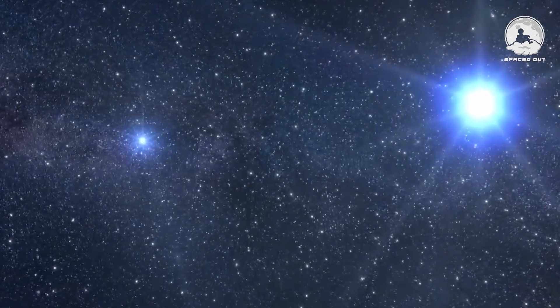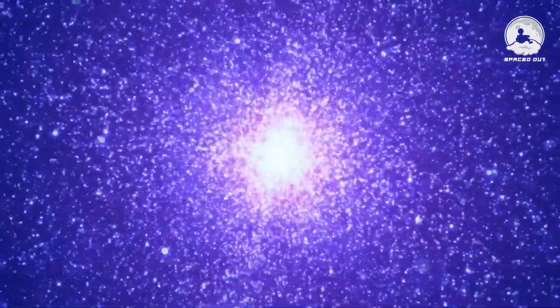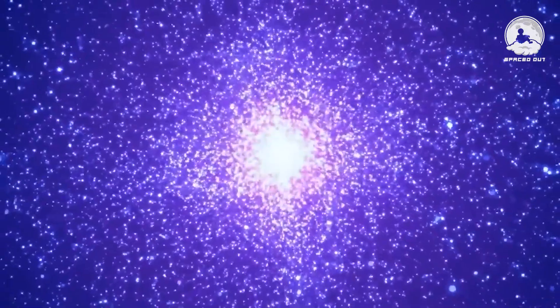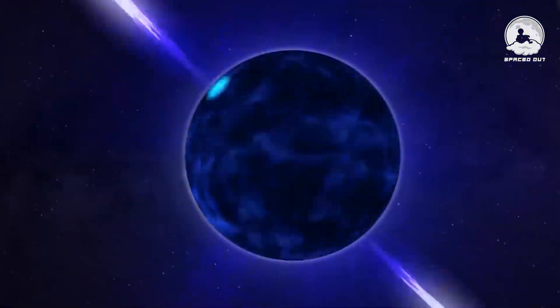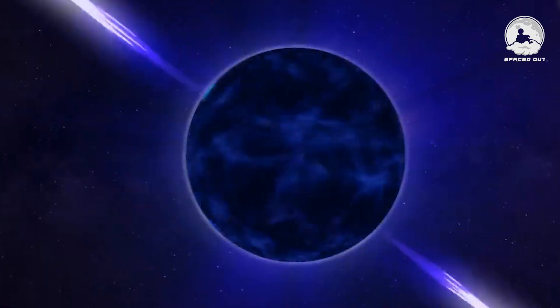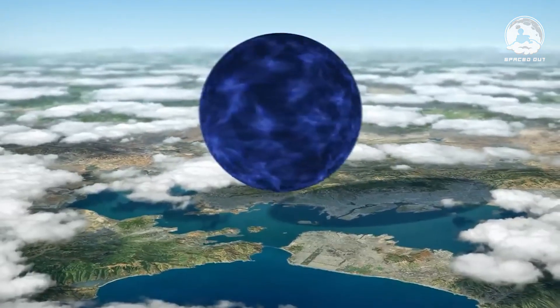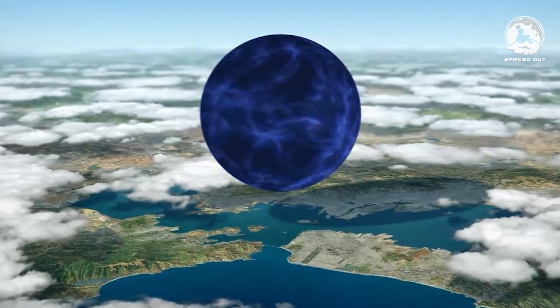Picture this. Electrons and protons, typically keeping their distance, find themselves forced together due to the immense pressure of the collapsing star. They fuse into neutrons, forming a tightly packed ball akin to atomic nuclei. This ball, made mostly of iron and roughly the size of Earth, condenses into a tiny, city-sized nugget of pure nuclear matter.